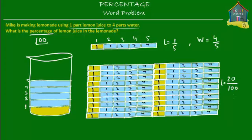The remaining eighty parts — that's one hundred minus twenty — is water. So if we have to make one hundred glasses of lemonade, we would need twenty glasses of lemon juice and eighty glasses of water. Lemon juice is twenty out of one hundred parts, which means it equals twenty percent.